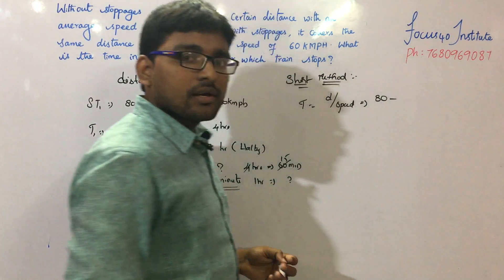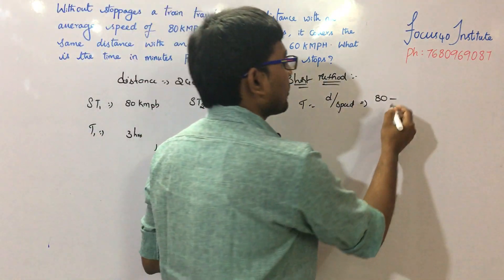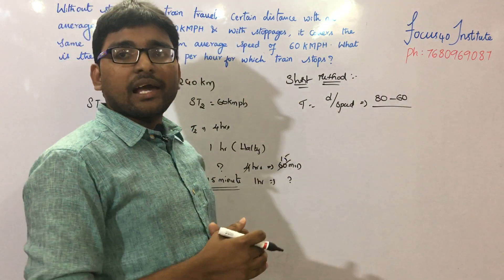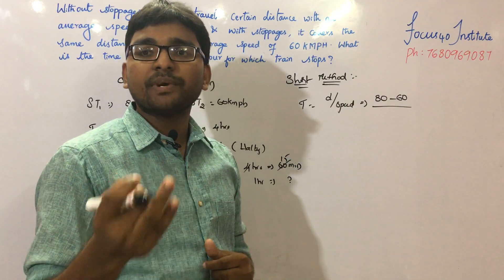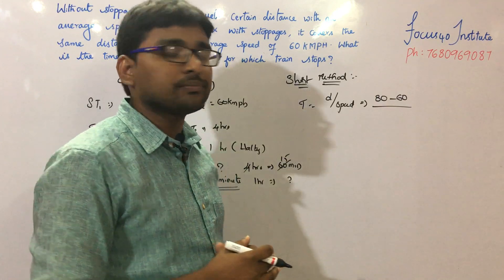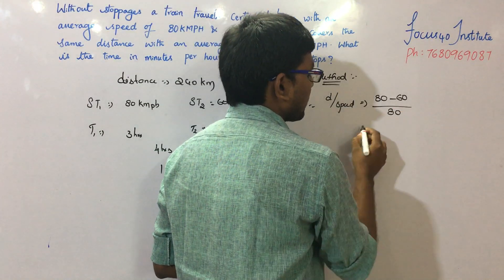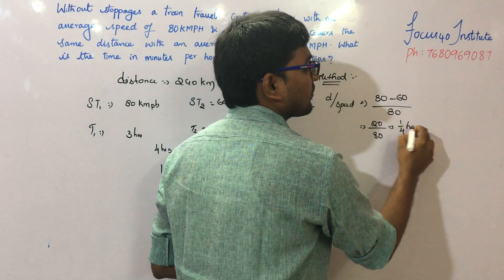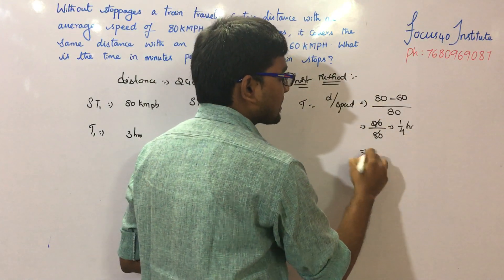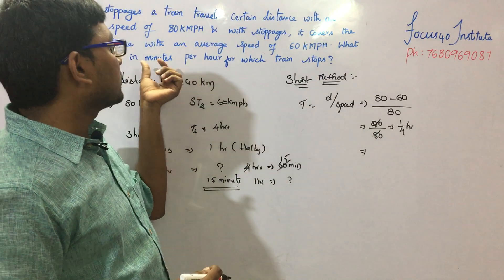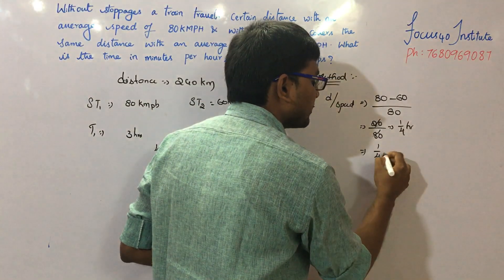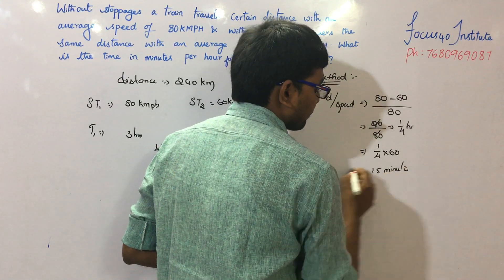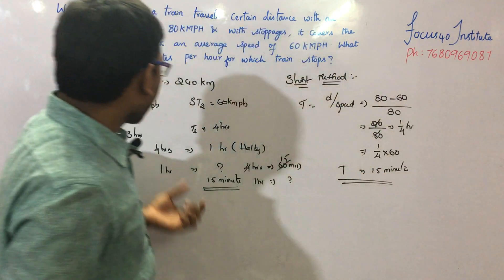Speed A without stoppages is 80 kmph, which is considered the faster speed. The speed difference is 80 minus 60, which is 20. The halting time is 20 divided by 80, which equals 1 by 4 hour. Multiplying by 60 gives 15 minutes. So the halting time per hour is 15 minutes.